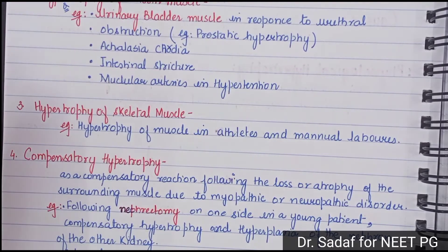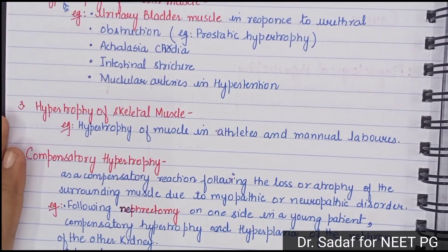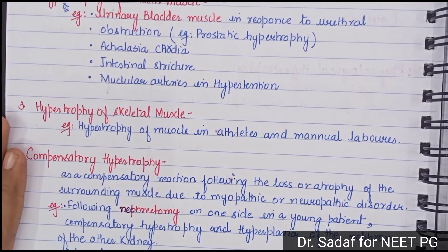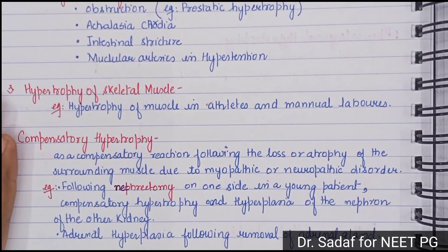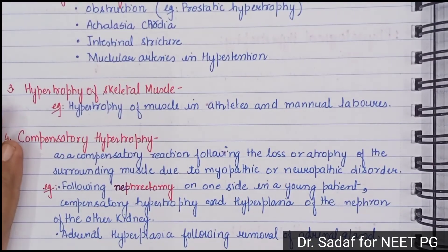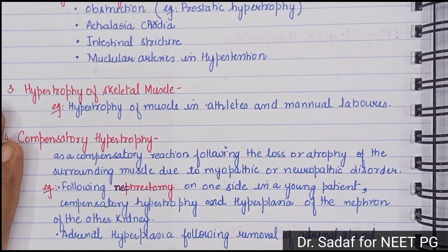For example, if we do a nephrectomy — if we remove one kidney — the result is compensatory hypertrophy and hyperplasia of the nephrons of the other kidney. Similarly, adrenal hyperplasia can occur following removal of one adrenal gland.